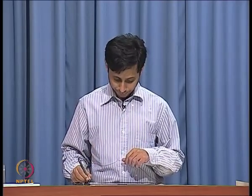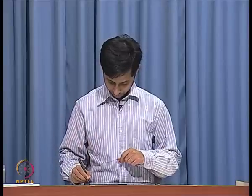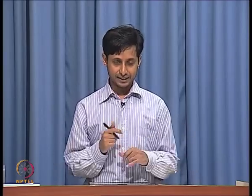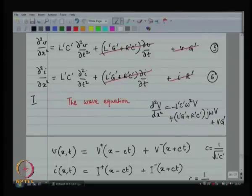We came up with a couple of differential equations. Equations 1 and 2 were the two partial differential equations we started from, and we modified these to come up with equations 5 and 6, which are the final partial differential equations. These two differential equations are no longer coupled to each other — they are independent. So I have got all voltages in one, and all currents in the other.